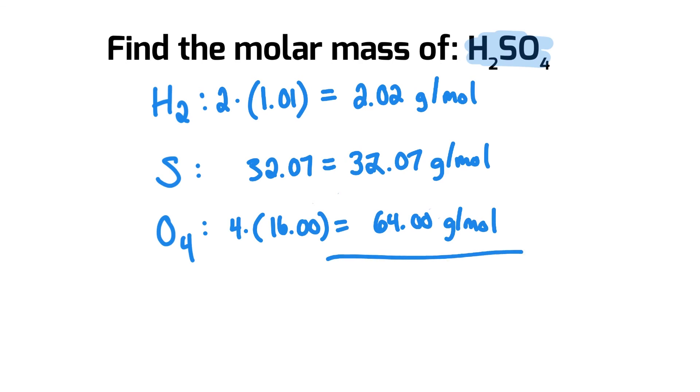And now I have to go through and add up all of these numbers, so I'm going to put a plus sign so I can sum them up, and I'm going to get 98.09 grams per mole as my final answer for the actual molar mass of H2SO4.